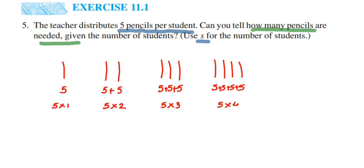Similarly, if there are four students we add five four times, or just multiply 5×4. So if you observe, the five is fixed and the numbers one, two, three, four are changing — they represent the number of students. Here they are asking us to use s as a variable, so s indicates the number of students.